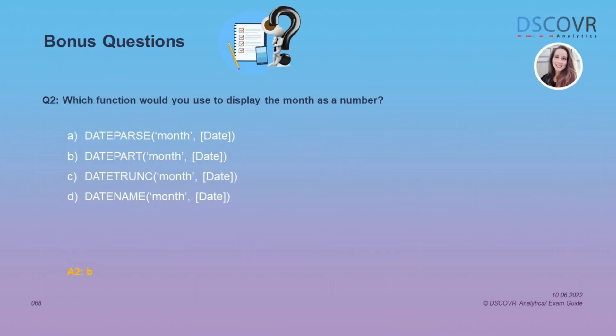Question number 2 gives us four different functions: date parse, date part, date trunk, and date name. It's asking which function we need to use in order to display the month as a number. If you are familiar with these functions, you might be stuck between two choices — date part versus date name. The correct answer is B, because the output of the date name function will be a string, not a number.